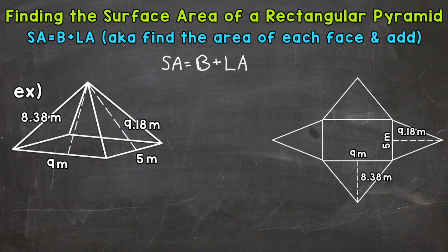Then we need to plug in our information, so we need to calculate the area of the base and all of the lateral faces, then add them together. Let's use the net on the right side of the screen to help us. You can think of a net as an unfolded 3D shape — it shows us all of the parts. Let's start with the area of the base. We have a rectangular base, so we can use the formula: area equals length times width.